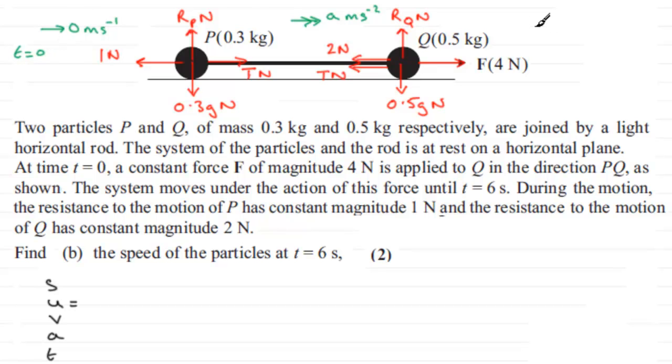And then over here, when T equals six, they've gained a particular speed, V metres per second.